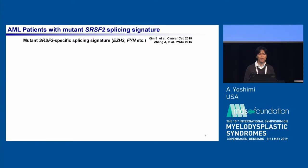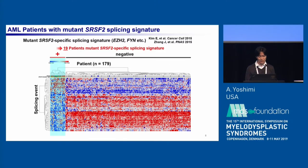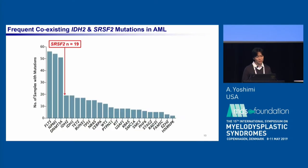First, we defined a mutant SRSF2-specific splicing signature based on well-established mutant SRSF2 targets, such as splicing events observed in EZH2 and FinGene, and we applied this splicing signature to the RNA sequencing dataset. We then identified 19 patients who had a mutant SRSF2-specific splicing signature. All 19 patients had SRSF2 mutations affecting the P95 hotspot with a mean variant allele frequency of 33%, making SRSF2 one of the most commonly mutated genes in AML.